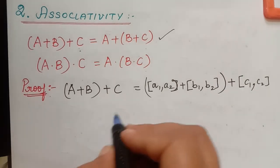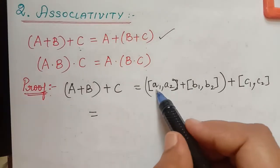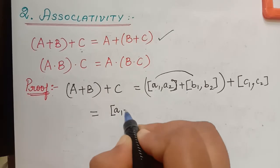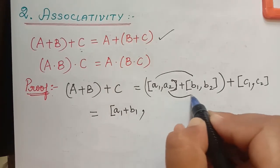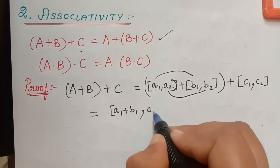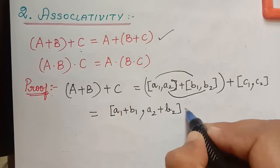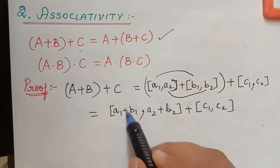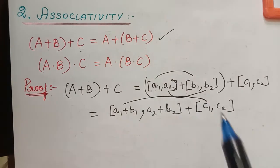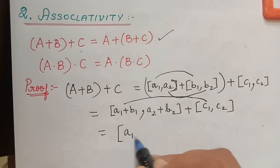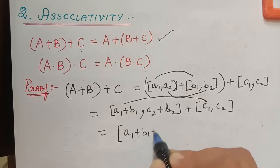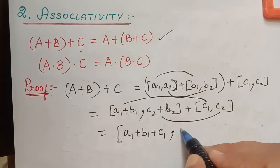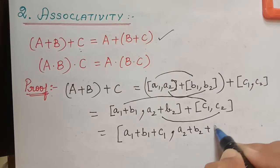Now this is equal to closed interval [a1 plus b1, a2 plus b2], plus closed interval [c1, c2]. Now we can add a1 plus b1 with c1, so that is equal to closed interval [a1 plus b1 plus c1, a2 plus b2 plus c2].